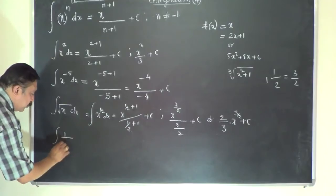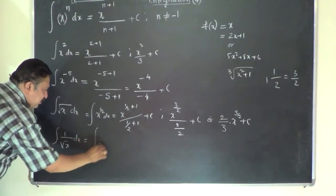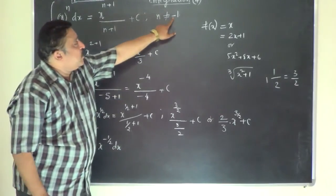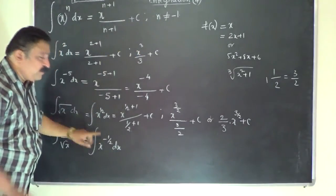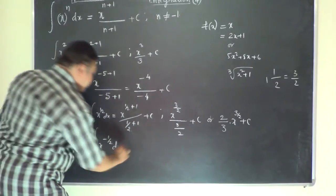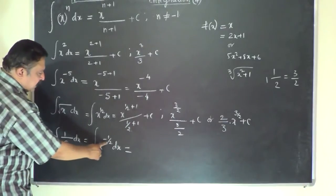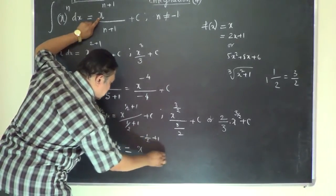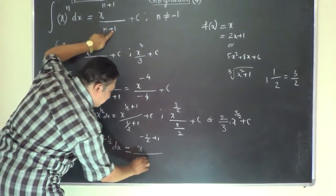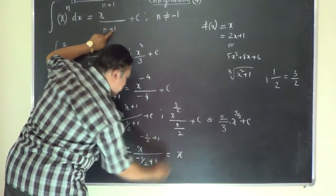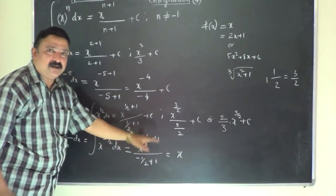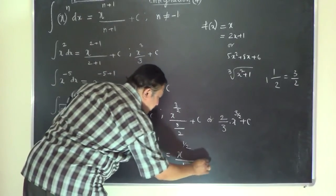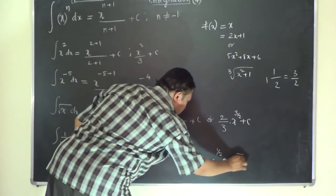If you have 1 over root x, you can write it as x to the power of minus half dx. Note that x to the power of minus half is valid — it is invalid only for n equal to minus 1. Here n is minus half, so this becomes x to the power of minus half plus 1 divided by minus half plus 1. Subtracting half from 1 leaves half, so the result is x to the power of half divided by half, which is 2 times root x plus c.